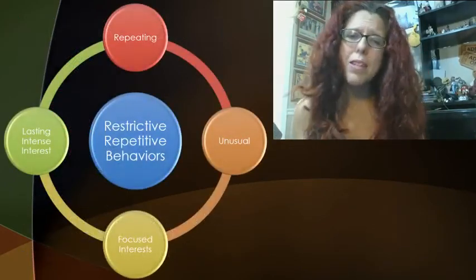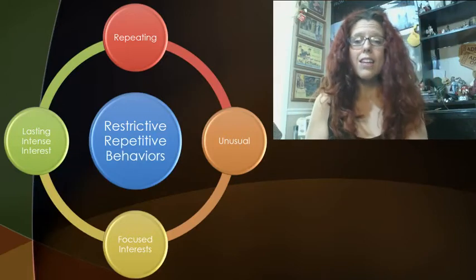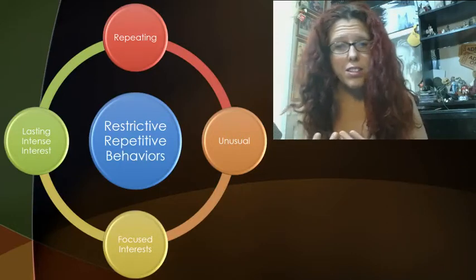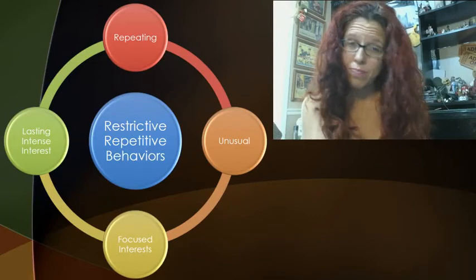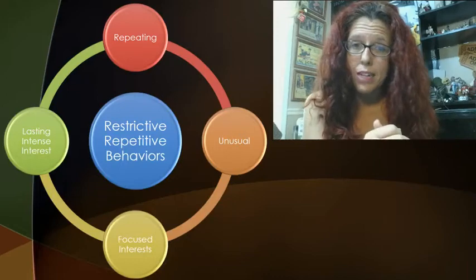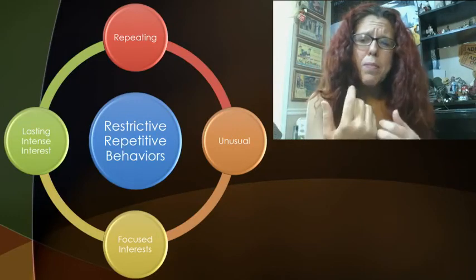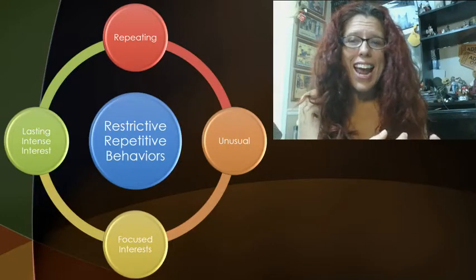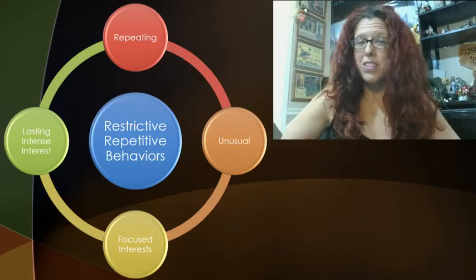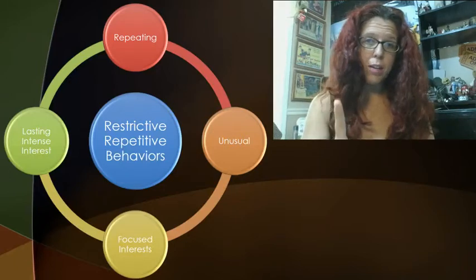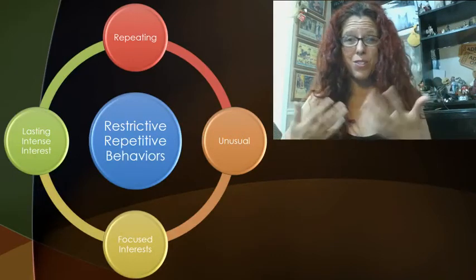People on the spectrum can have restrictive, repetitive behaviors — meaning they repeat certain behaviors or have unusual behaviors. They can be overly focused on certain parts of things. I've worked with children on the spectrum; one just loved owls — owls were her jam. It might be owls for six months, then deer, then race cars. They can have a lasting, intense interest in certain topics like art or numbers. They pay great attention to detail and have an innate ability to remember specific facts.